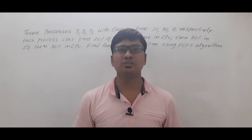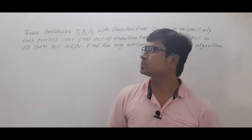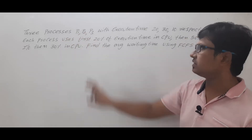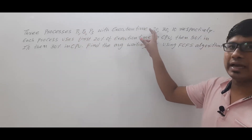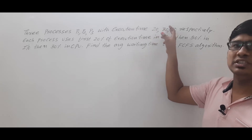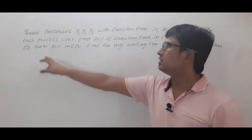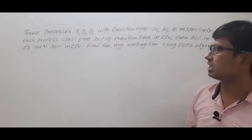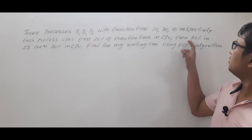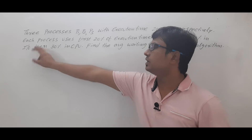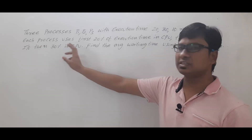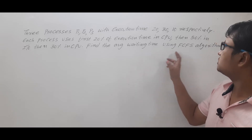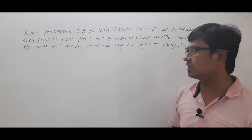Let me read out the question. Three processes P1, P2, P3 with execution times of 20 units, 30 units, and 10 units respectively. Each process uses the first 20% of execution time in CPU, then 50% time in IO, then 30% in CPU. Find the average waiting time using the first come first serve scheduling algorithm.